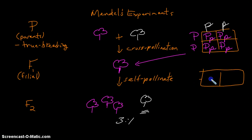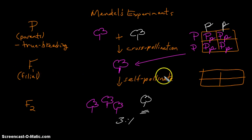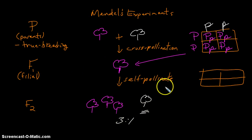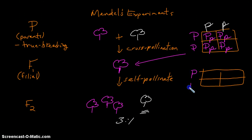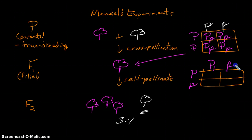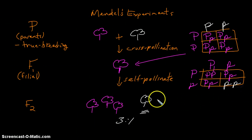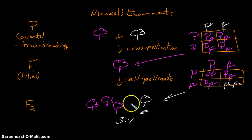When he allowed this F1 population to self-pollinate, what happened was he took these hybridized offspring, and most of them were purple, but then again, a percentage of them ended up being white, which is the explanation for these results that we see here.